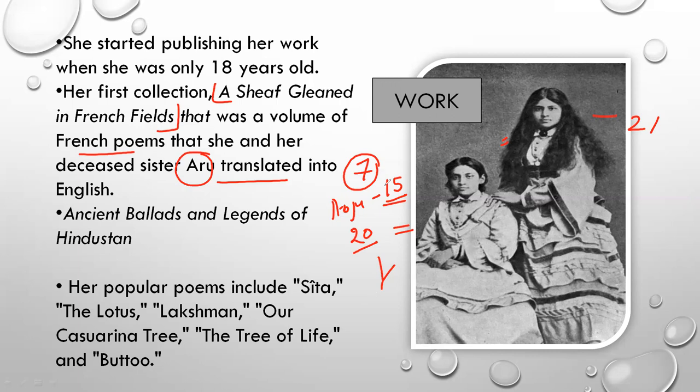First her brother died as a child, then her sister, and then she herself. Coming back to her writing — around 17 to 18 years of age, she returned to India and started publishing her work when she was only 18 years old.